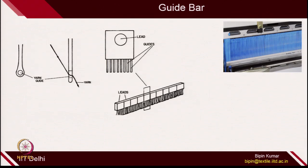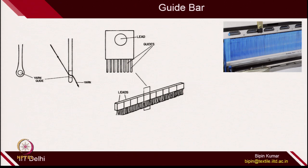The first element is the guide bar. A guide is similar to a heald frame — each yarn is controlled by one guide. Multiple guides can be placed on a bar. One guide is shown here; the bar may have 1,000 or more guides. Each guide carries one yarn — if there are 4,000 guides, it can carry 4,000 yarns. It has a hole through which yarn can be passed, similar to the heald frame in a weaving machine.